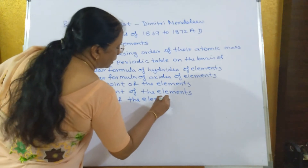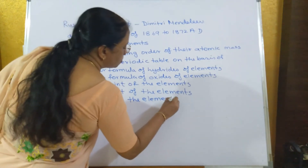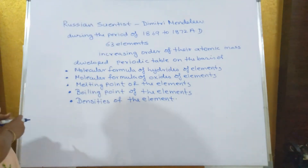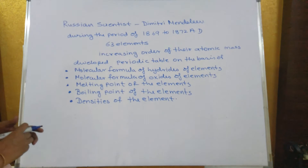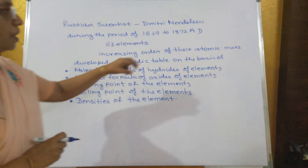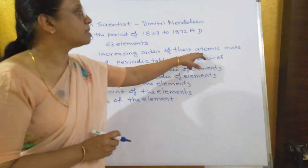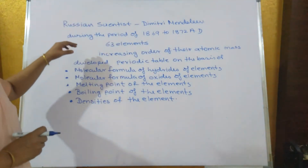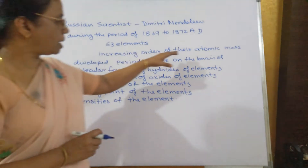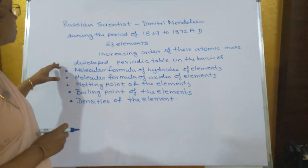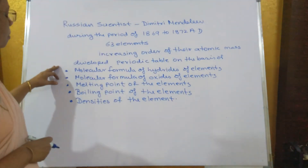He was able to prepare a periodic table. The previous scientists concentrated only on the atomic mass, whereas Mendeleev concentrated on the atomic mass as well as on the physical and chemical properties.